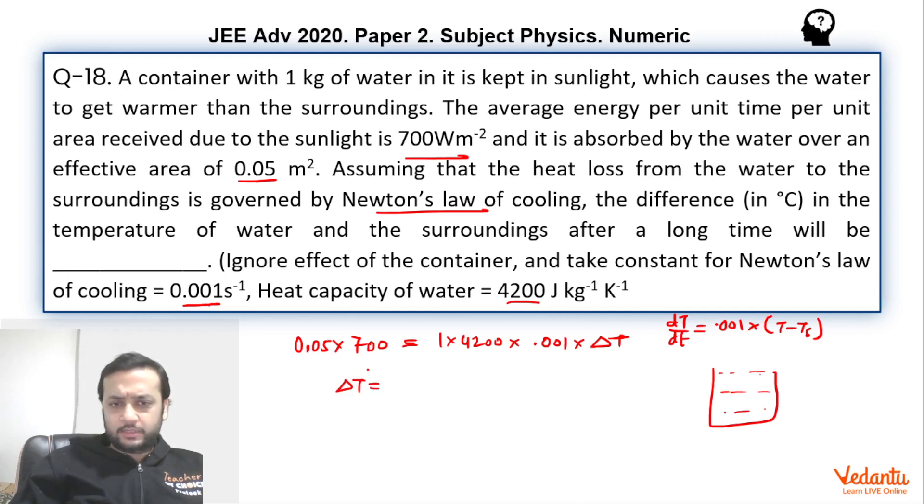This is a very easy calculation as well. So if you take this, this becomes 35 divided by 4.2. So this will become 350 by 42 which is 25 by 3 which is 8.33 degree Celsius or Kelvin whatever you want to say. It will be same thing since we are talking about the temperature difference. So answer will be 8.33.